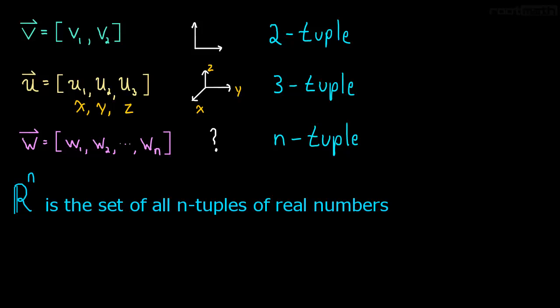So for example, if you have a vector with two components, that is an element of R^2. Because R^2 is the set of all two-tuples, all two-tuples. Well, v is just one of those two-tuples. So v must be in R^2.